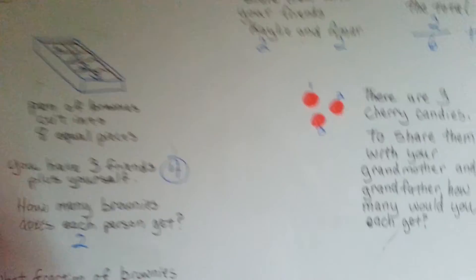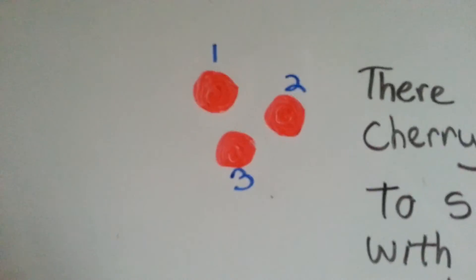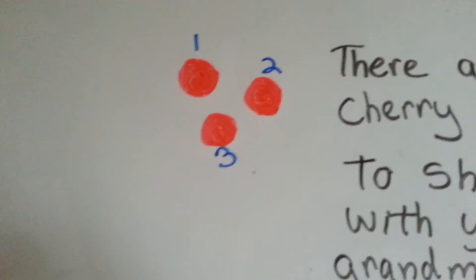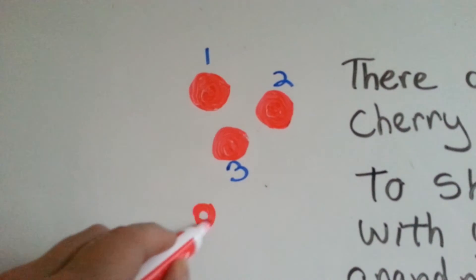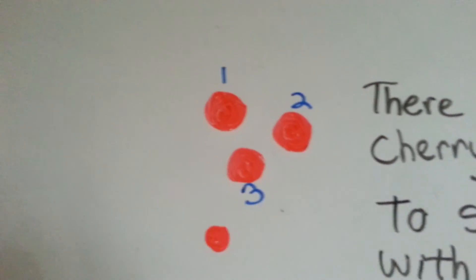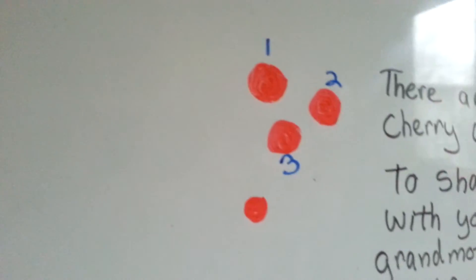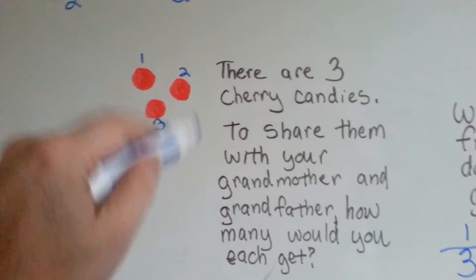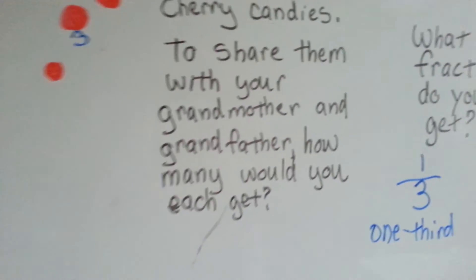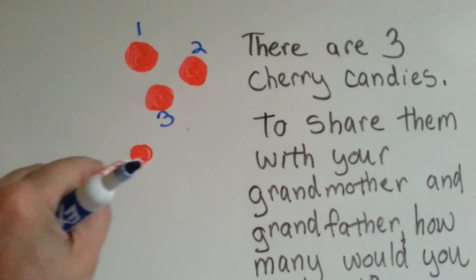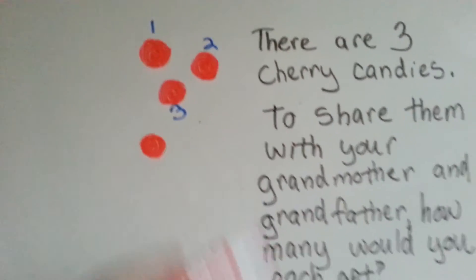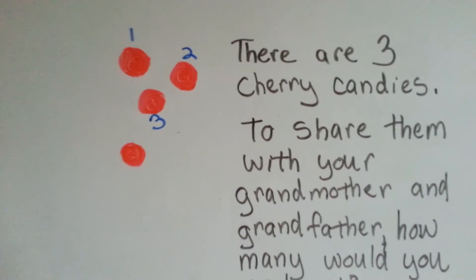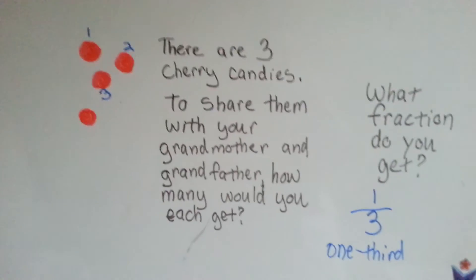What would happen if there were four cherry candies here? How would you split that evenly? In fact, that one looks a little small, doesn't it? Let's make it as big as the other ones. What if there were four cherry candies here, but you wanted to split them evenly?